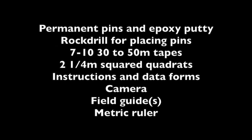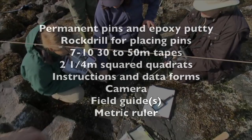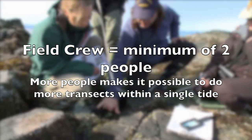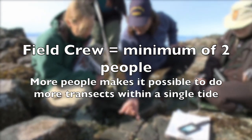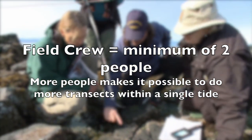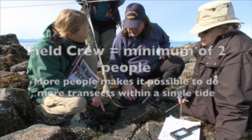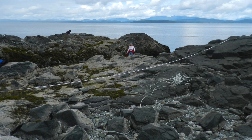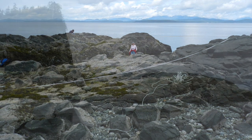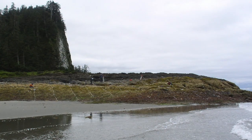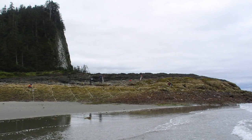Before heading into the field, make sure that you have everything on your equipment list. Check the tide chart and aim for a field day that coincides with the lowest tides. At least two people are required for the field crew, and if more volunteers are available, more transects can be completed within a single tide. The ideal sites are those with a rocky intertidal area that contains few tide pools, boulders, cobble, gravel, sands, or mud, and are accessible and safe.